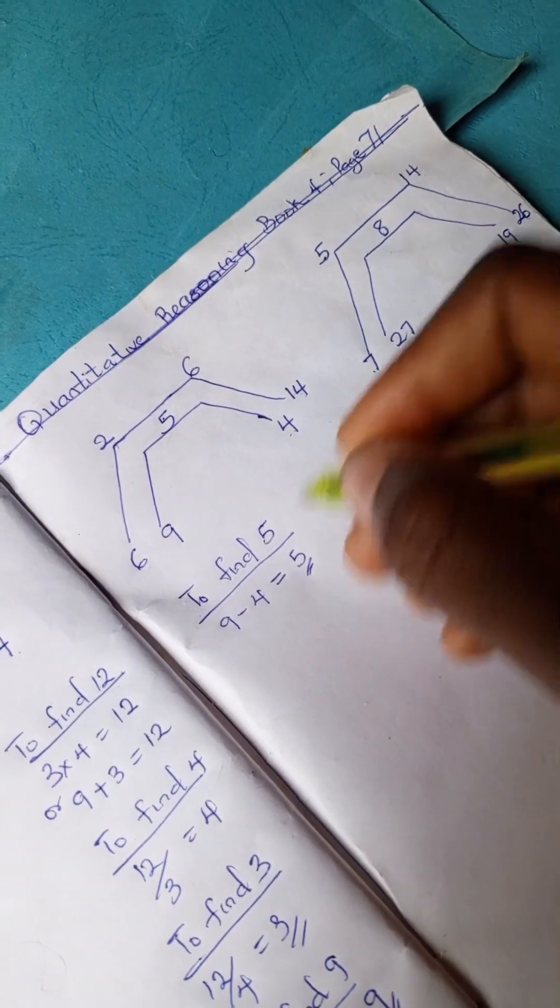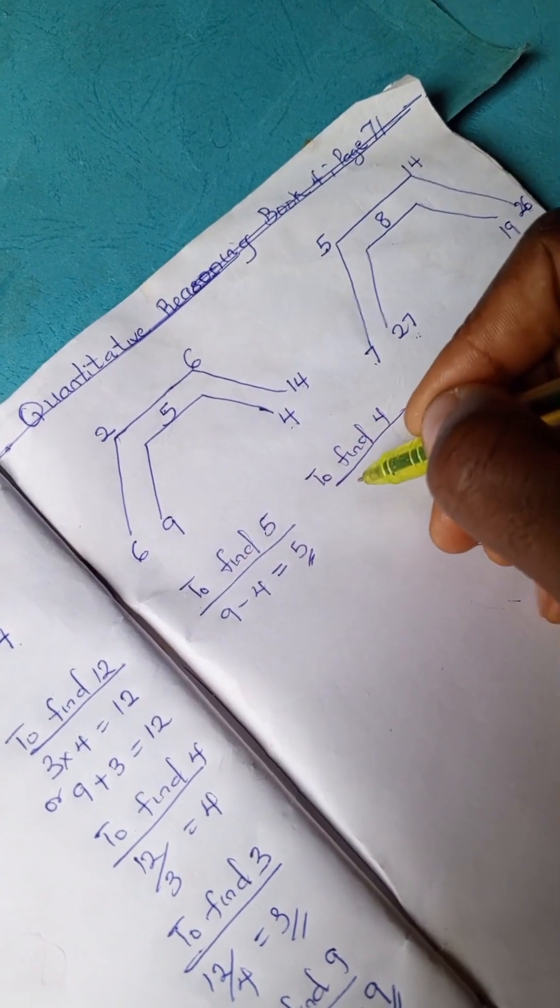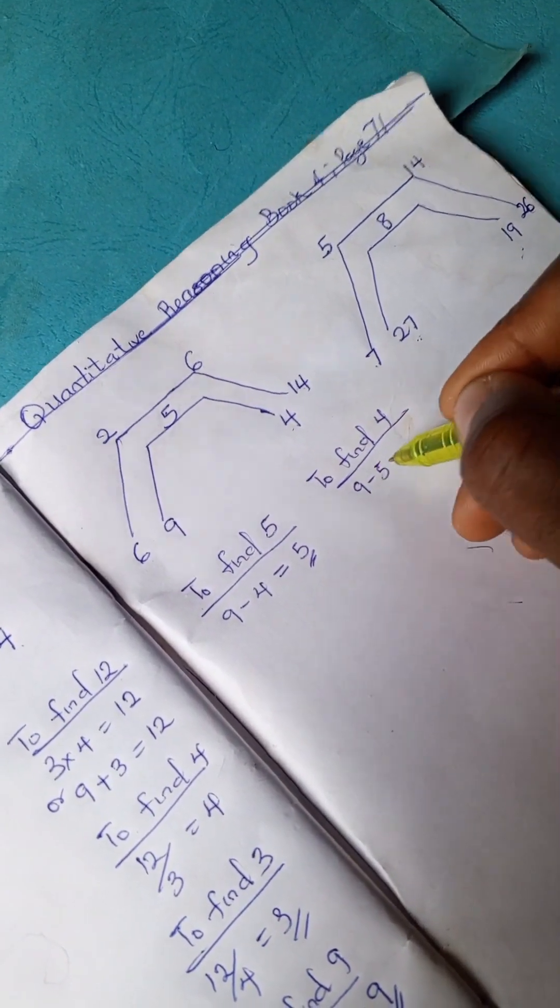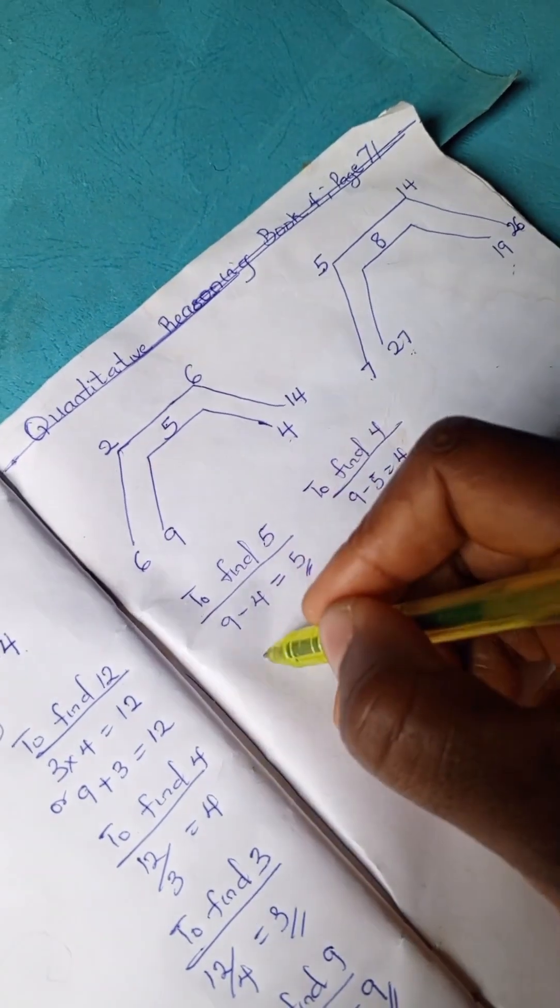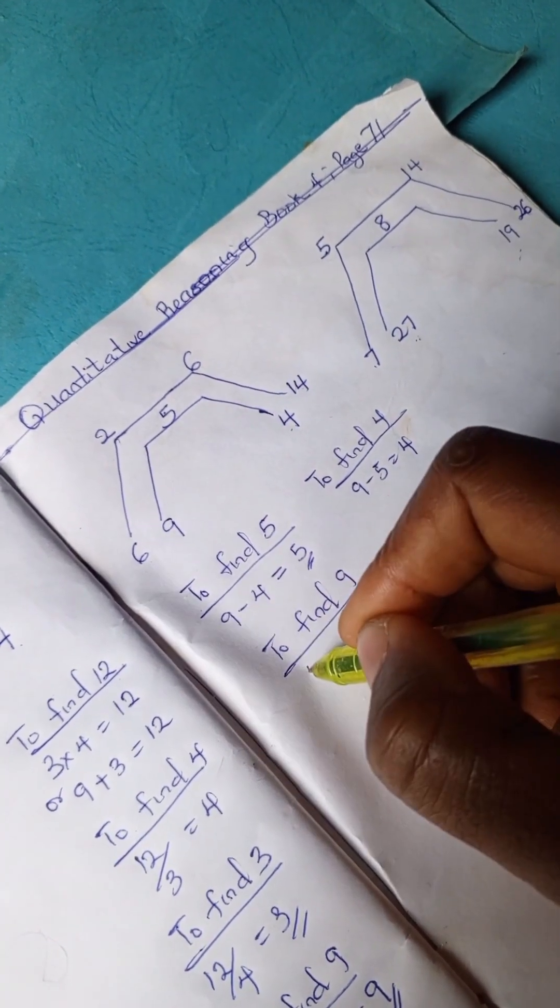So we can as well say, to find 4, 9 minus 5 is 4. To find 9, we have 4 plus 5 is 9. So we are done with this.